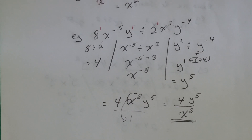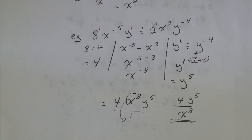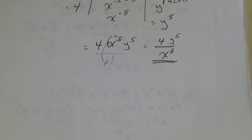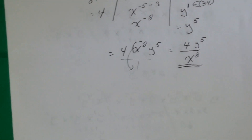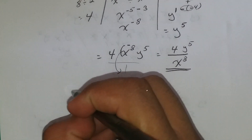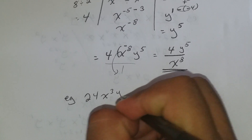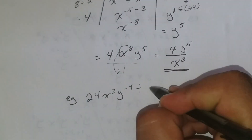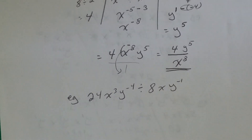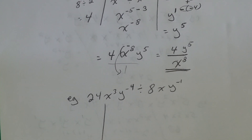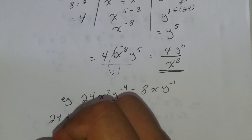If you have questions, ask. Let's take a look at another example. Example three: 24x to the third y to the negative four, divided by 8xy to the negative one. Let's start with the numbers: 24 divided by 8.